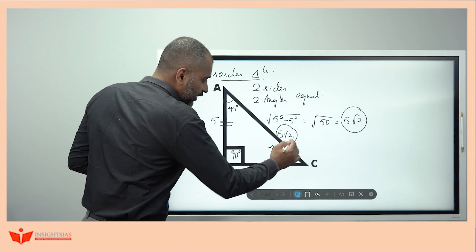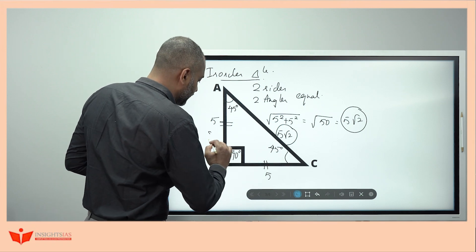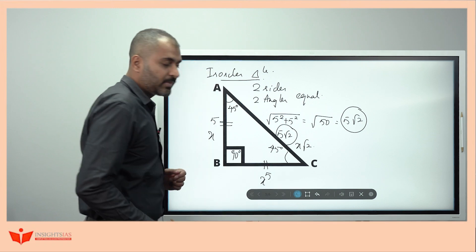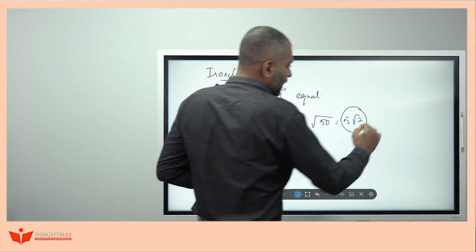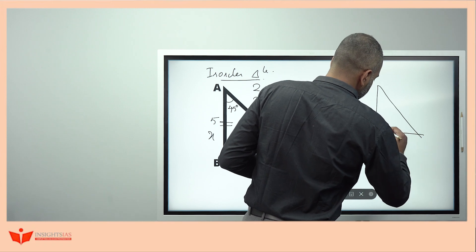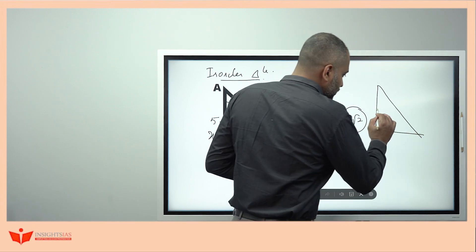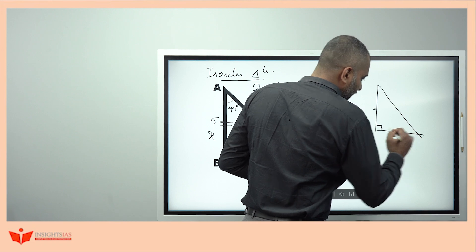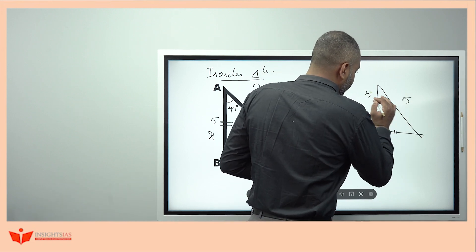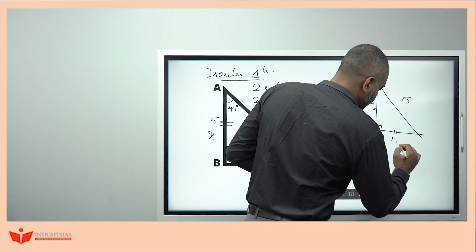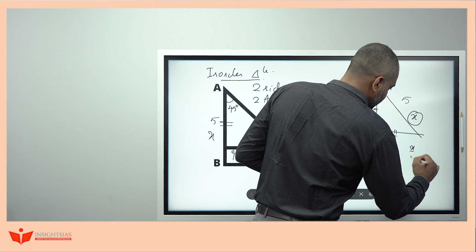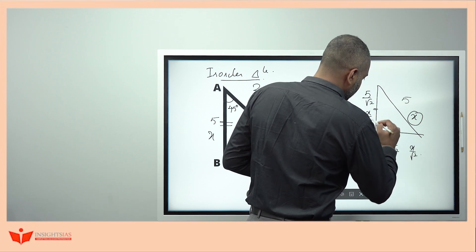Similarly: if sides are 10, 10, the hypotenuse is 10√2; if 15, 15, then 15√2; in general, if both equal sides are x, the hypotenuse is x√2. Conversely, if the hypotenuse is known (say 5), then each equal side is 5/√2. In general, if the hypotenuse is x, each equal side is x/√2.